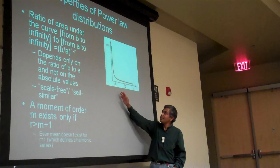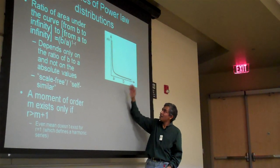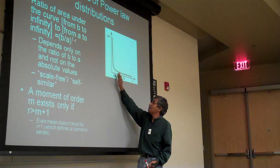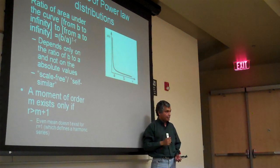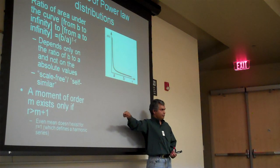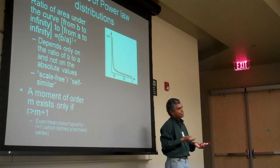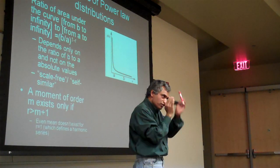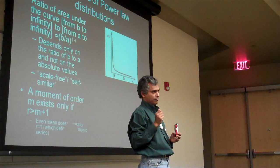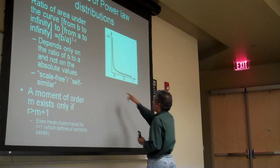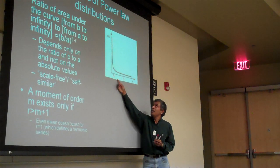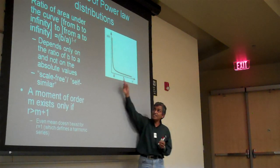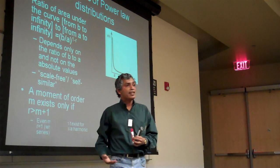If you have a finite area underneath this, and you take this curve and redraw it starting from A onwards, the curve again looks like that. That's why it's called self-similar: if you take any small part of this curve and zoom in on it, it again looks like that. The area from A to infinity and the area from B to infinity is basically only dependent on the ratio of B and A.